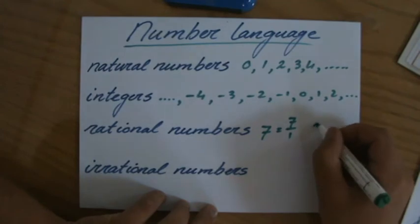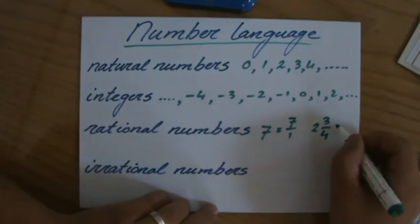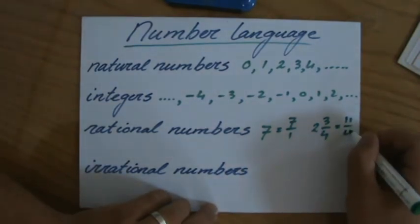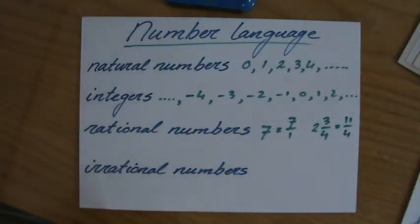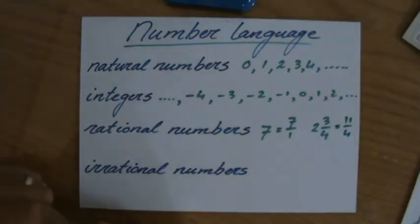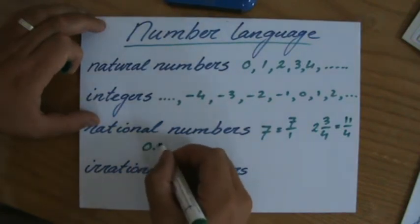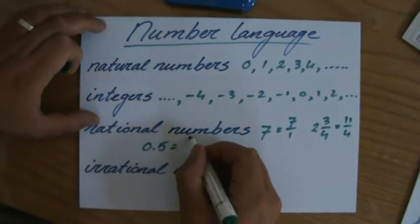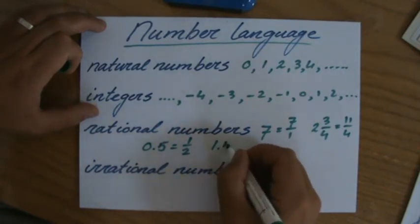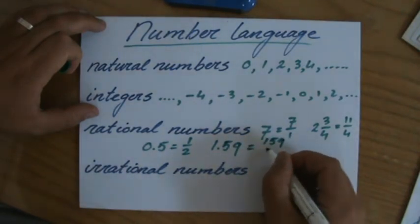Also, the number two and three-quarters is an example of a rational number because that could be written as eleven over four. So as long as you can write it as a fraction — where the denominator is not zero — we are talking about a rational number. Terminating decimals like 0.5 or 1.59 are also rational numbers, for example 159 over 100.